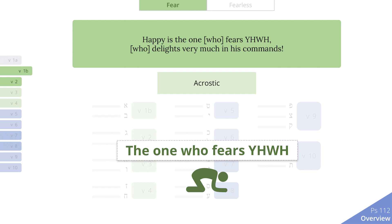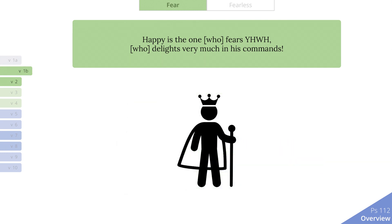Just like Psalm 1, we will see much imagery in Psalm 112 that traditionally belongs to the Israelite king, who is supposed to be the model Israelite, delighting in the Lord's law and fulfilling all His commands.